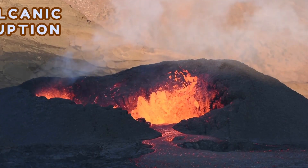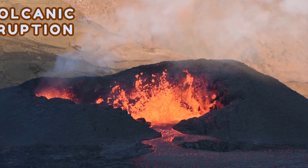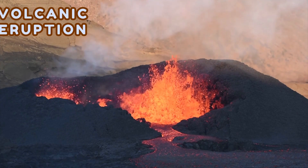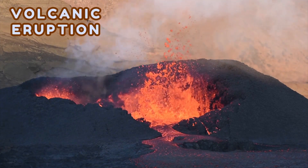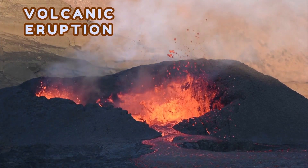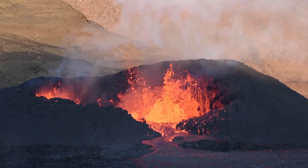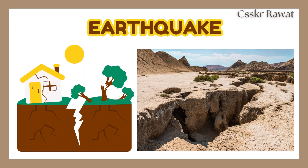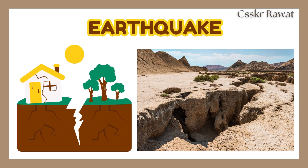Volcanic eruption. Volcanic eruptions happen when molten rock, ash, and gas are emitted from a volcano.